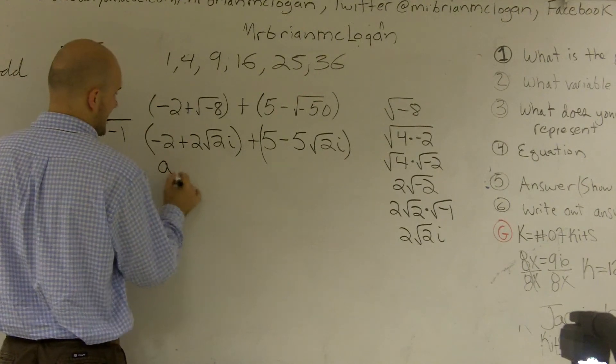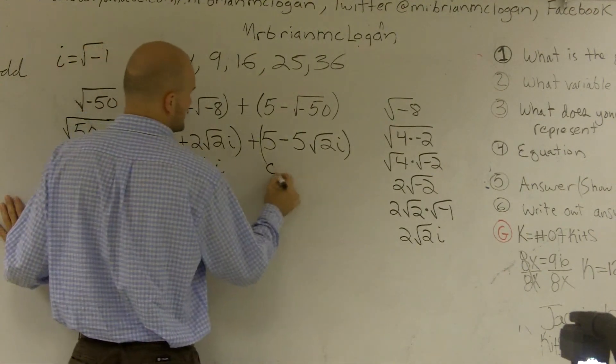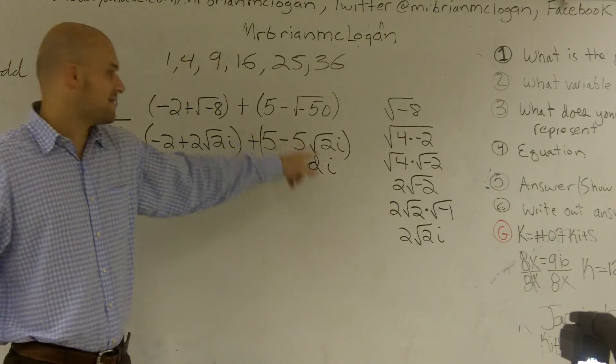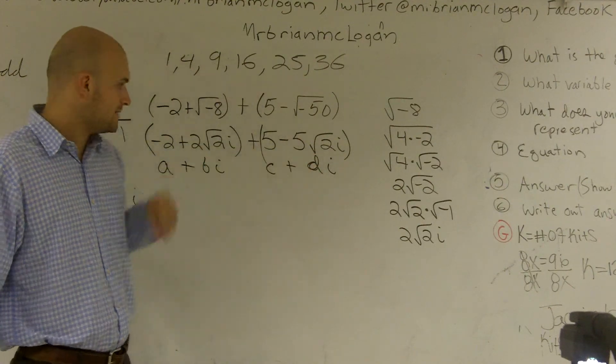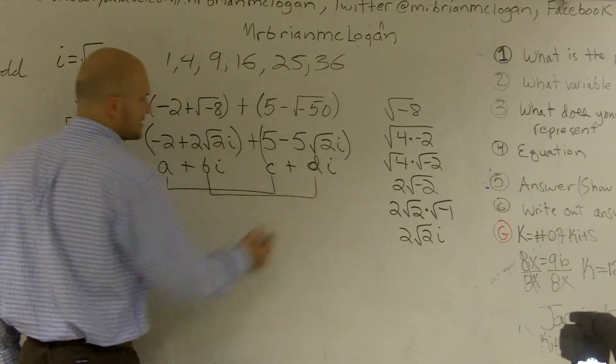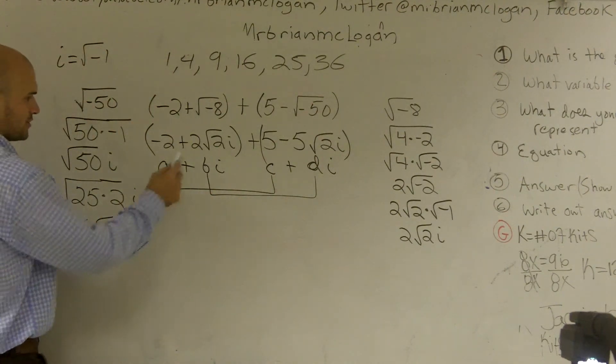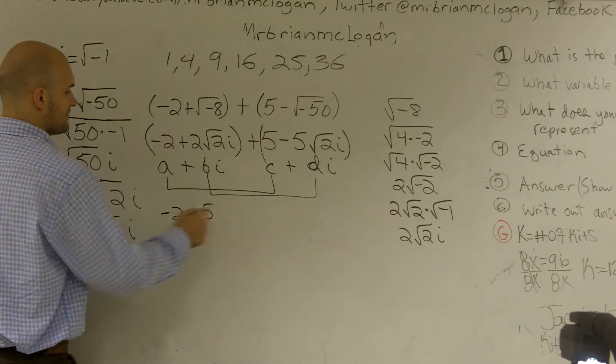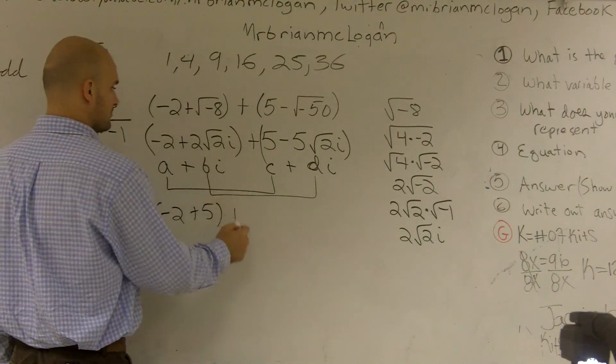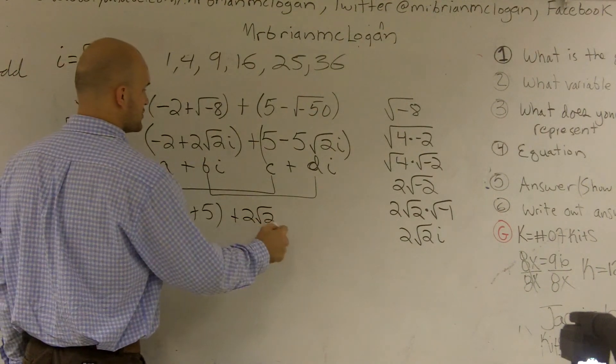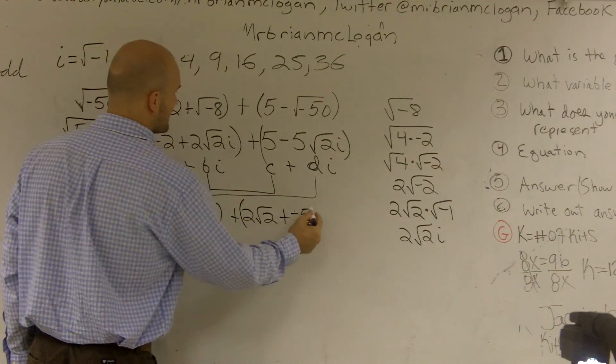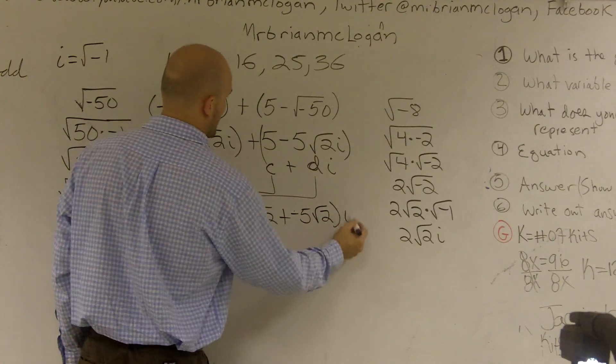we have a plus bi, and this would be c plus di. We have negative 5 as our d, or negative 5 times square root of 2 as our d. I can only add my reals to my reals and my imaginary to my imaginaries. So I'm going to rewrite this as negative 2 plus 5 and then plus 2 square root of 2 plus negative 5 square root of 2i.